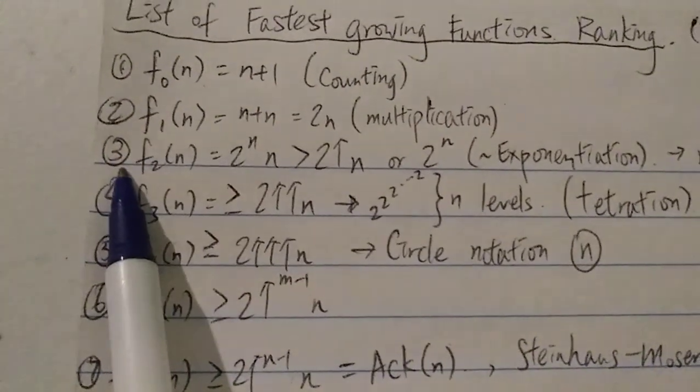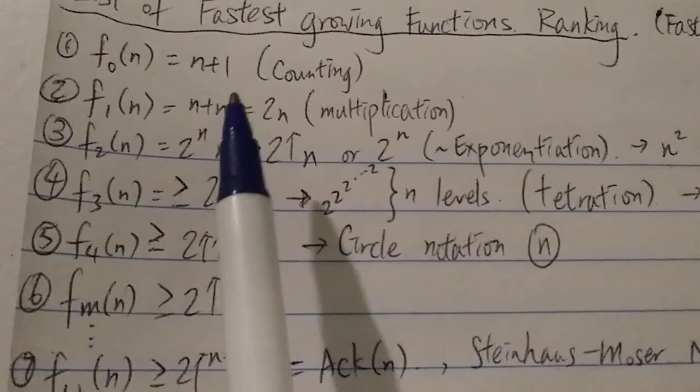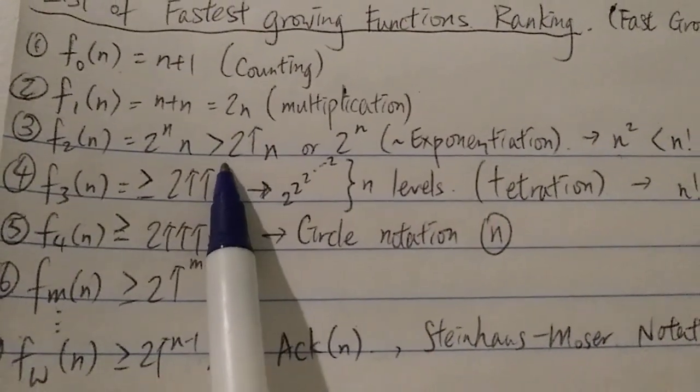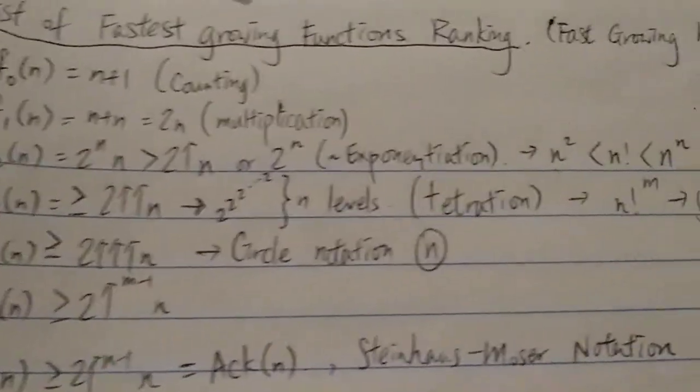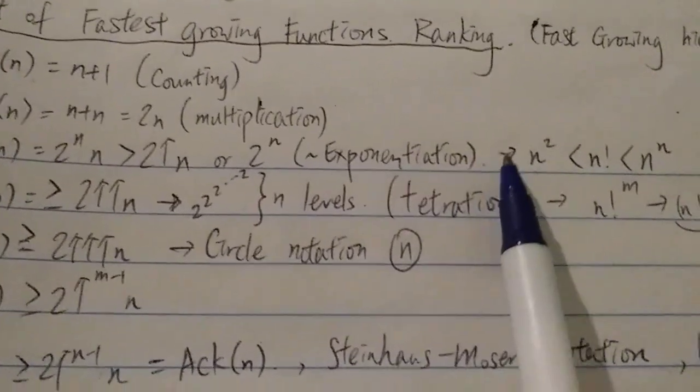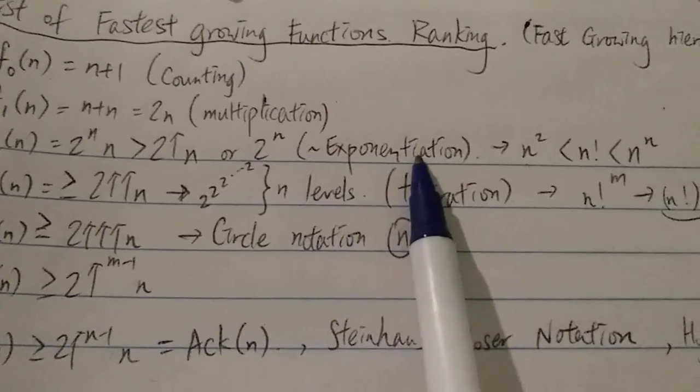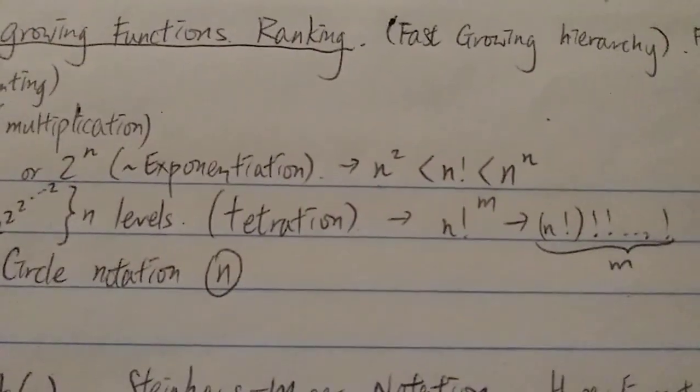So next, number 3, we have F2(n), which is equal to 2^n times n. And this is greater than 2↑n or 2^n, which is, of course, exponentiation. And this is probably the fastest-growing function we're going to use in daily life, which is basically level 3 in here.